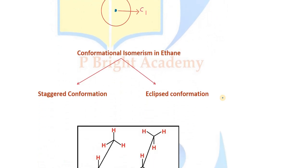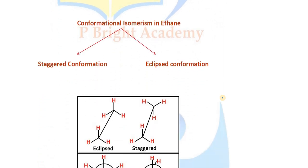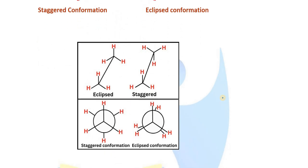This is how we represent staggered conformation and eclipsed conformation in Newman's projection. In the eclipsed conformation, the front and back carbons have their hydrogens exactly aligned — the front hydrogen overlaps with the back hydrogen, similar to a solar eclipse where the moon and sun are in the same line.